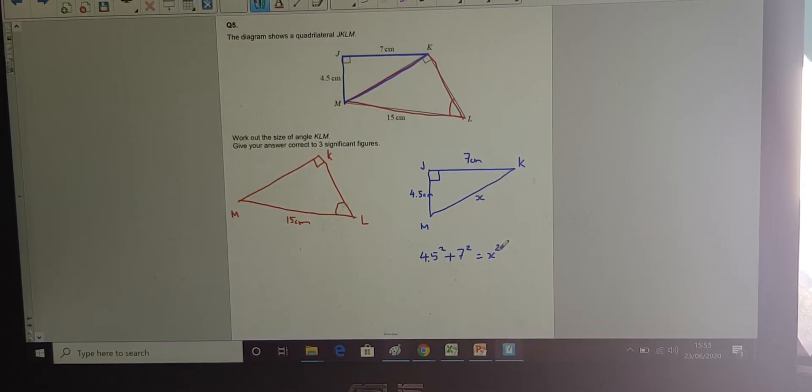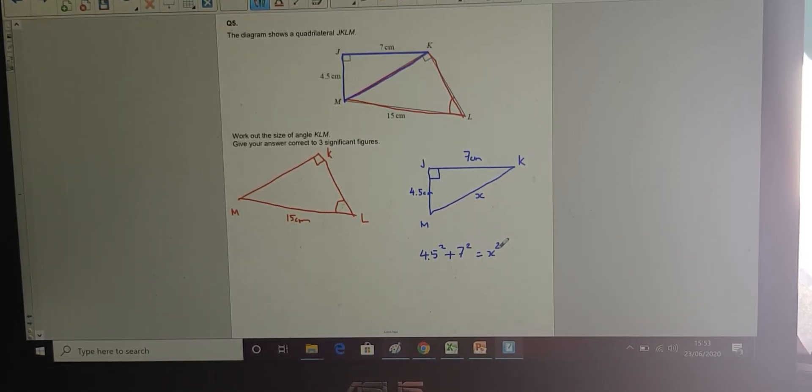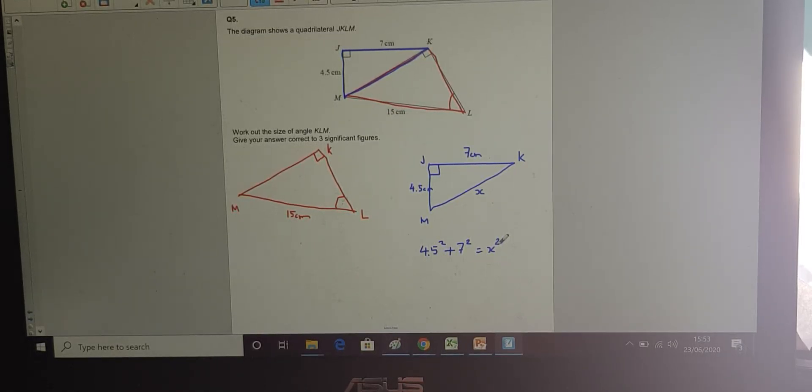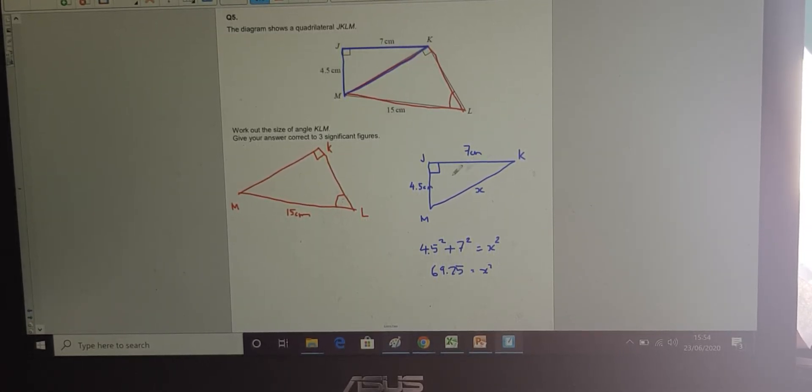Let's plug that in on our calculator. I'm going to get 4.5 squared, plus 7 squared. And that gives me 69.25. Now, if I was in a rush, equals X squared, I might put, oh, well, that's 69.25. Well, obviously it's not. If that's 7 and that's 4.5, that's way too big, yeah?